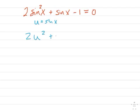And then I rewrite this as 2u² + u - 1 = 0.